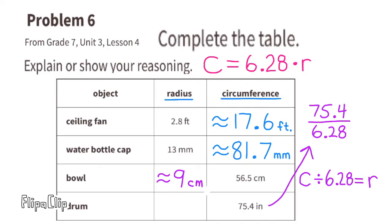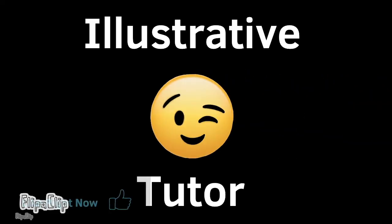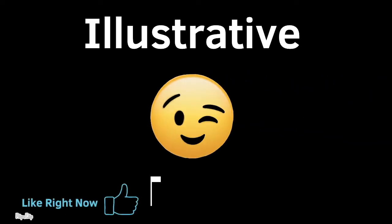For the drum, the circumference is 75.4 inches. Dividing 75.4 by 6.28 gives approximately 12.006, which rounds to 12 inches. The radius of the drum is approximately 12 inches.